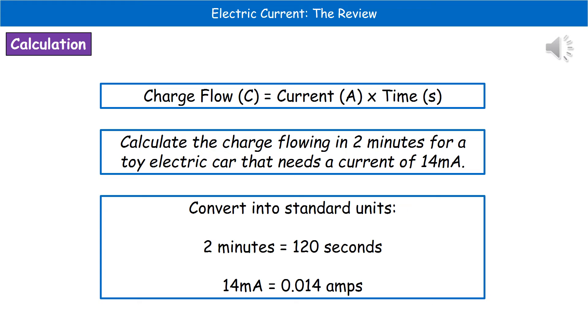So if we have a look at the kind of question we can actually get asked about our charge flow, we could get a question along these lines: calculate the charge flowing in two minutes for a toy electric car that needs a current of 14 milliamps. Now, the first thing we have to do there is remember to convert into our standard units.